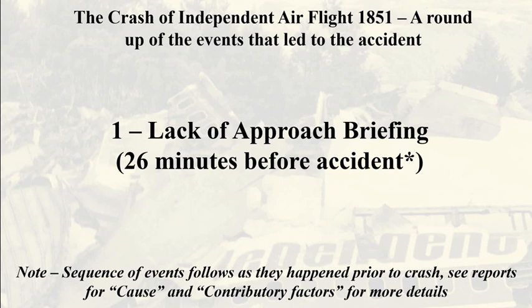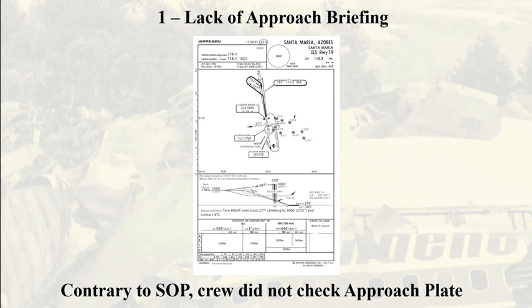Now to the sequence of events. First, the lack of an approach briefing. Before approaching Santa Maria Airport, Standard Operating Procedures — SOP for short — state that the crew should have conducted the so-called approach briefing, which would include reviewing the approach plates. Approach plates are charts that contain information pertinent to operations at the airport. In the image, a replica of an approach chart like the one aboard Flight 1851. Investigation stated the crew did not perform the approach briefing that would include reviewing the approach plates.